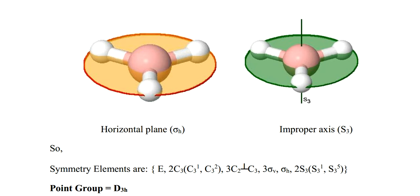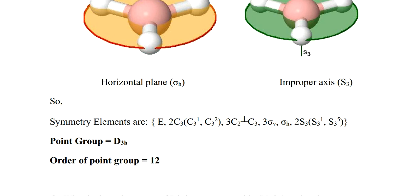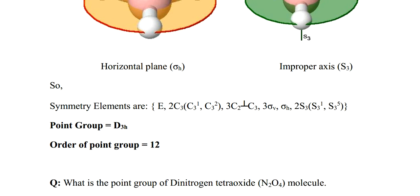The improper axis of symmetry S3 is also present. S3 is nothing but C3 × sigma. How many improper axes are present? The symmetry elements are: E, 2C3 (C3¹ and C3²), 3C2 perpendicular to C3, 3sigma_v, sigma_h, and 2S3 (S3¹ and S3⁵) — we have already discussed how to evaluate improper axes in the previous video. So the point group of BH3 is D3h, and the order is 4N = 4 × 3 = 12.